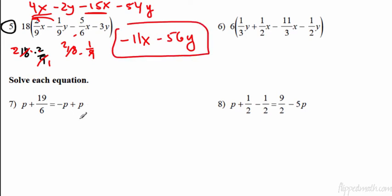So combined like terms, that's going to give me negative 11x minus 2y and minus 54 is minus 56y. So that's how you do those. Solve each equation. Now, I'm going to do 8 here actually because 8 is a little more ugly. Look at all those 2s in there. But what you want to do is use the skill that we just went over so that you can clear out all the fractions. So this has 2s in the bottom. So I'm going to multiply both sides of the equation by 2. And I'm going to multiply everything.